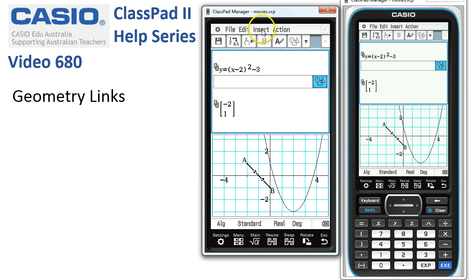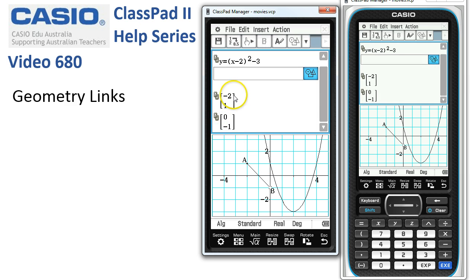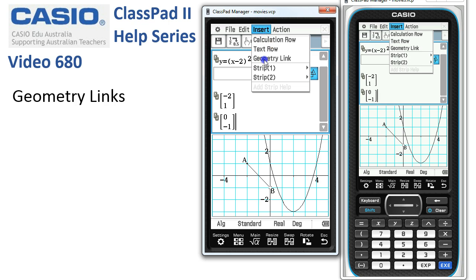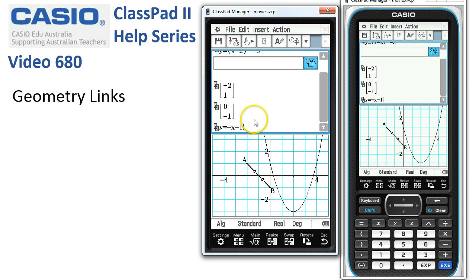Now, upstairs, I just need a couple more geometry links. So I'm going to put in a geometry link, tap onto B so that we've got the coordinates of the two points. And then I'll put in a third geometry link. And this one's going to be the equation of the line here. So when I drag it up, there it is.